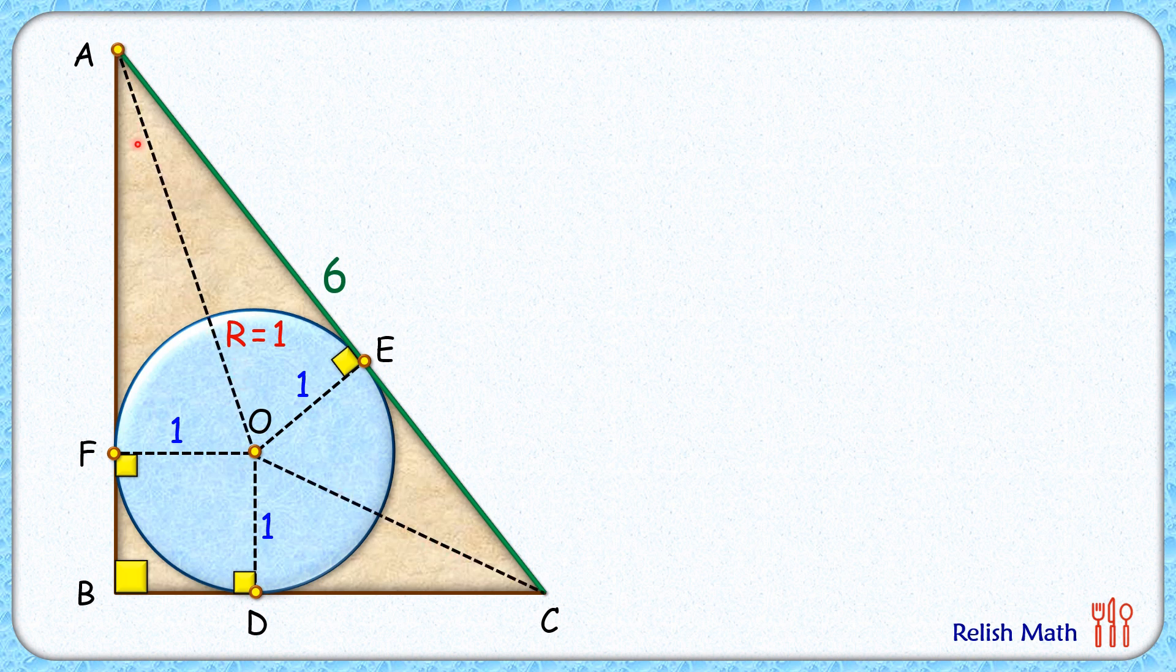Now if we look at this triangle, the red and yellow triangle, from external point A two tangents are drawn AF and AE, and by theorem they will be equal in length. Thus AF is equal to AE, FO is equal to EO, and AO is common. Thus by side-side-side theorem both triangles are congruent to each other. As the triangles are congruent, their areas will be equal. Let's assume the red triangle area is x, so yellow triangle area will also be x.